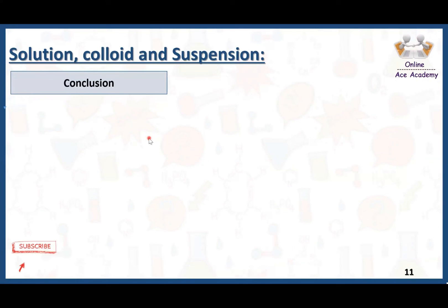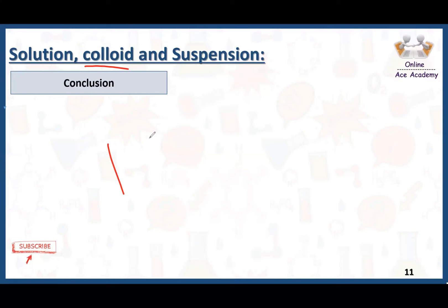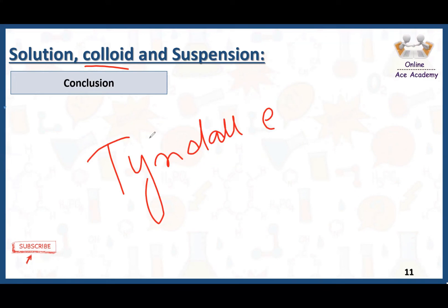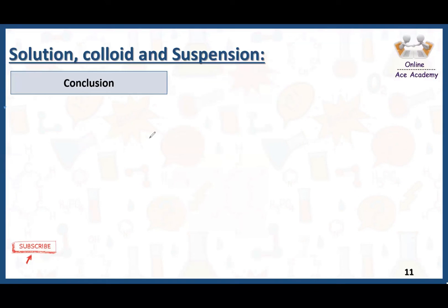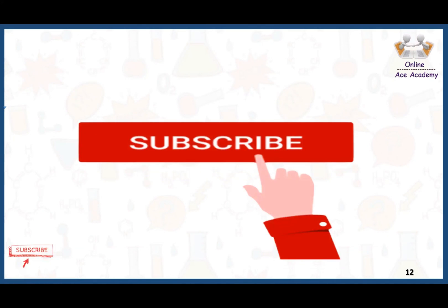To conclude today's lecture: a solution is made up of solute plus solvent, and the particles are very very small so we can't see them with the naked eye. A colloid has a unique property — it shows the Tyndall effect, which is the scattering of light when a light source is passed through a colloidal mixture. Colloidal particles are intermediate in size between solution particles and suspension particles. A suspension is a heterogeneous mixture with particles big enough to see with the naked eye.